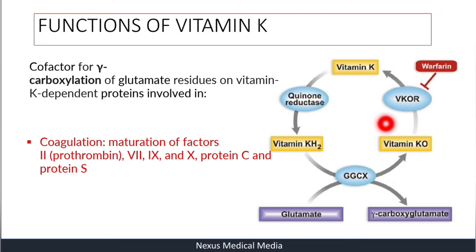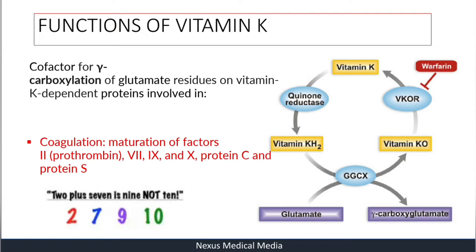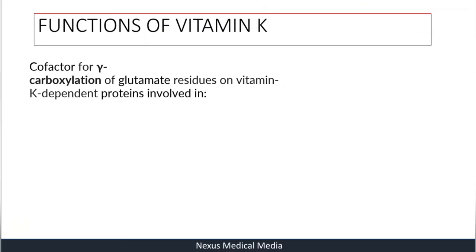This is the coagulation pathway, and this is also where warfarin targets. A helpful mnemonic: 2 plus 7 equals 9, not 10 — meaning Factors 2, 7, 9, and 10 are Vitamin K dependent, along with Protein C and Protein S.